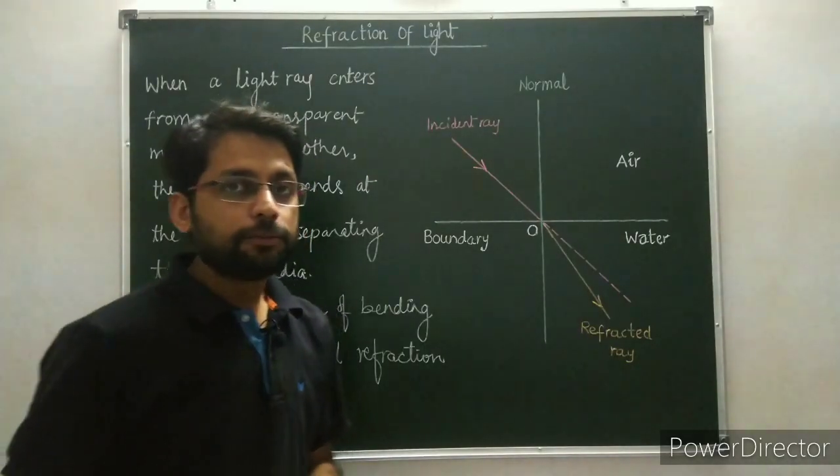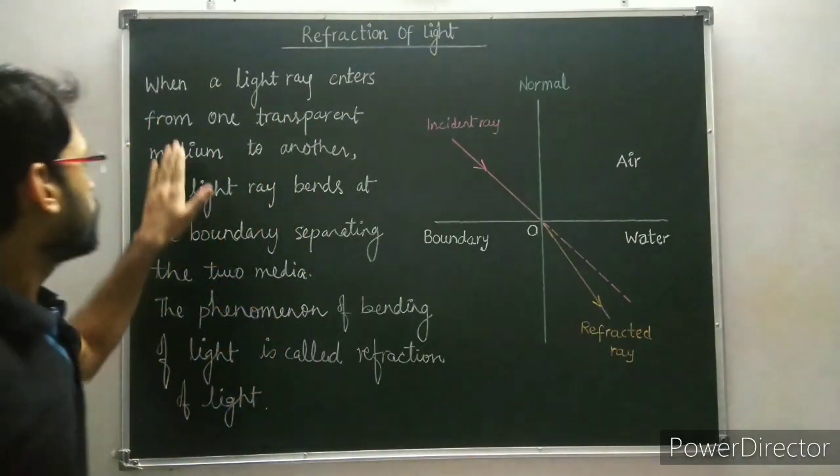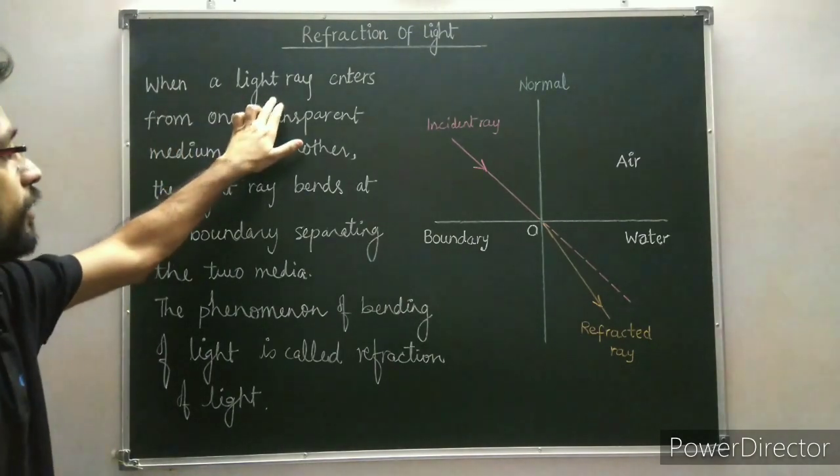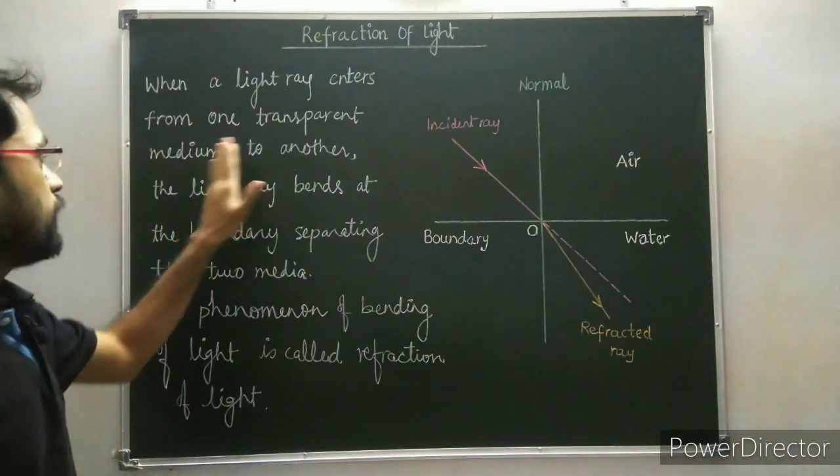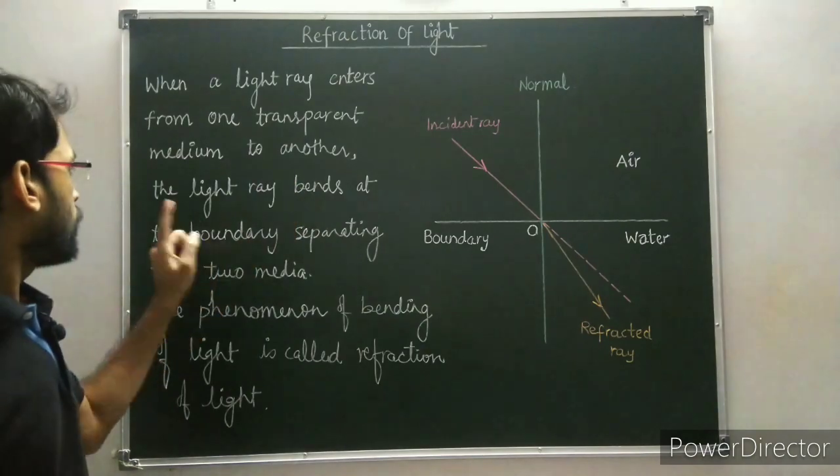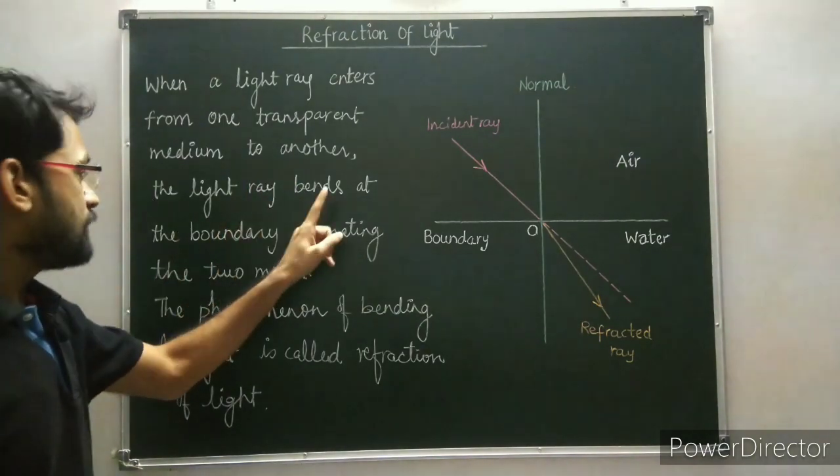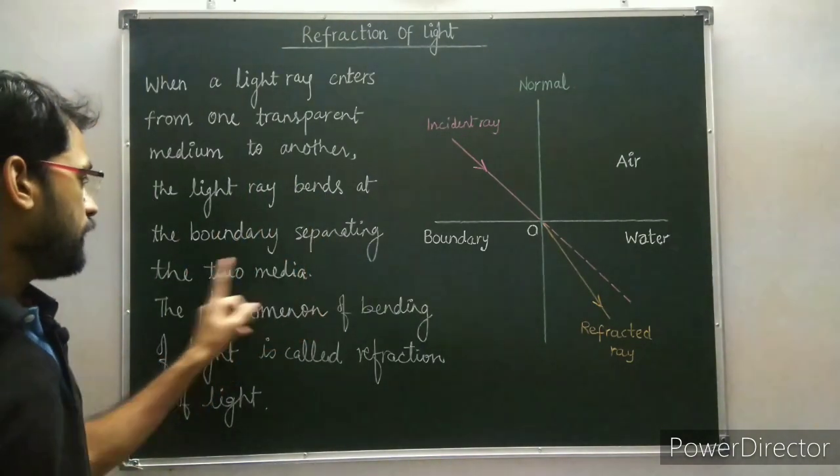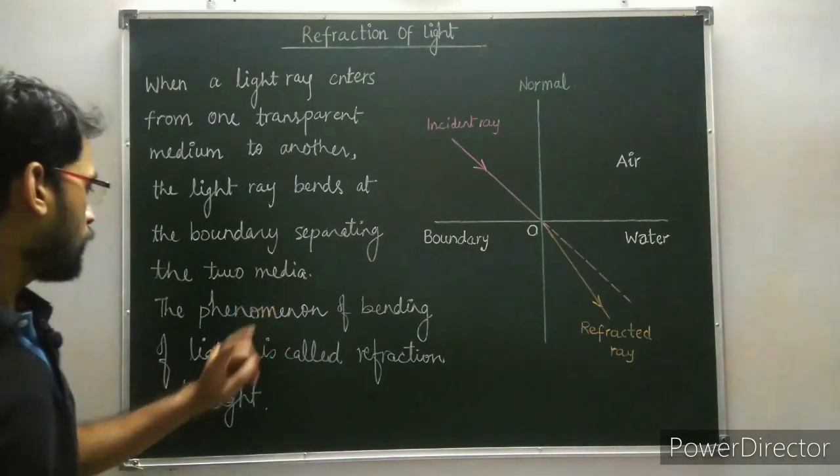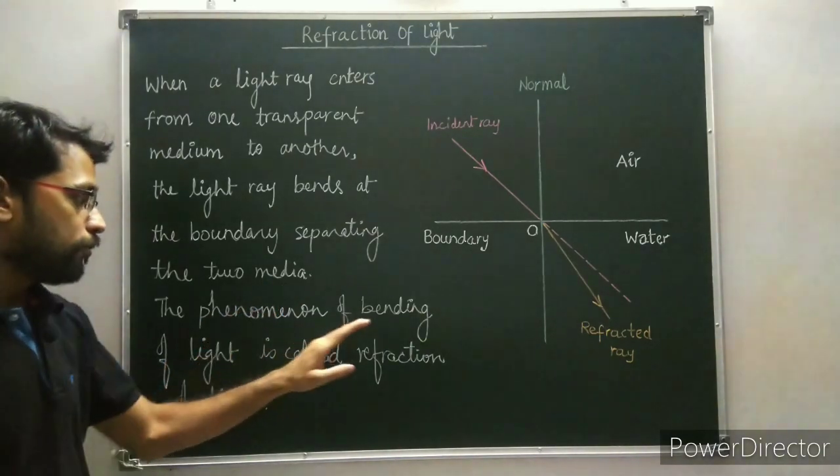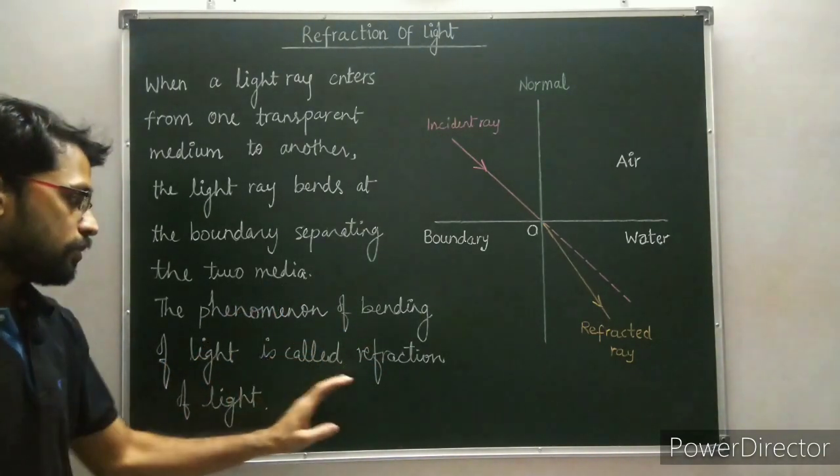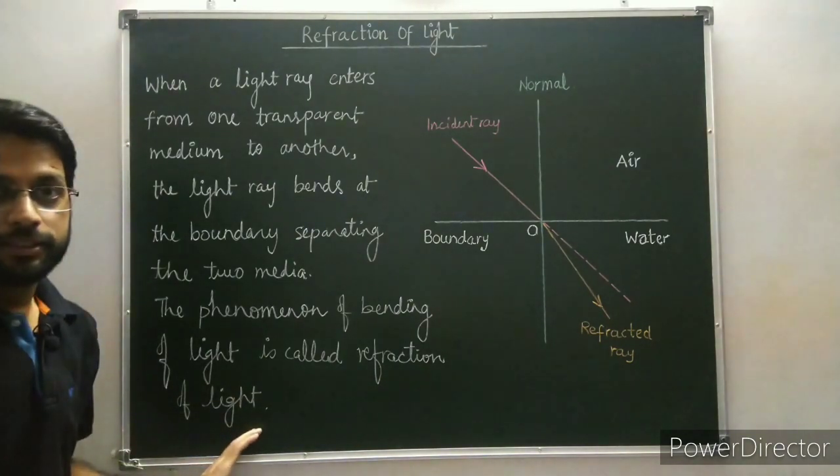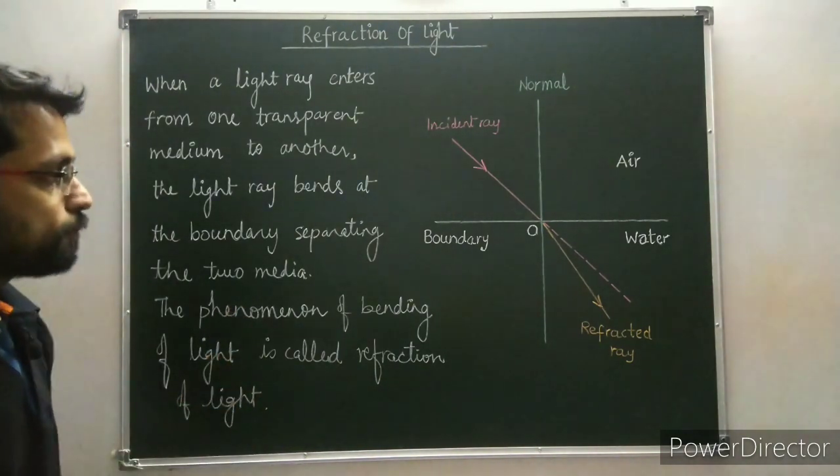We learn from the activity that when a light ray enters from one transparent medium to another, the light ray bends at the boundary separating the two media. This phenomenon of bending of light is called refraction of light. Note it down.